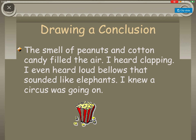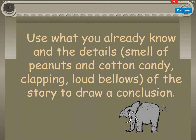Drawing a conclusion — the smell of peanuts and cotton candy filled the air. I heard clapping. I even heard loud bellows that sounded like elephants. I knew a circus was going on. Use what you already know and the details — smell of peanuts and cotton candy, clapping, loud bellows — to draw a conclusion.